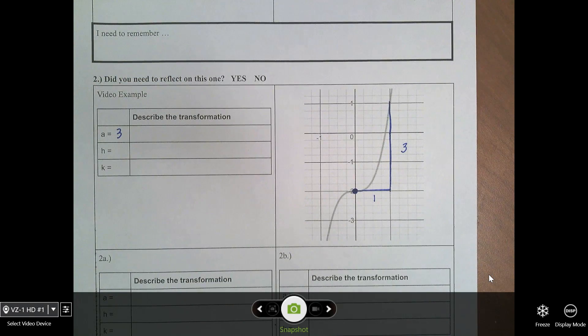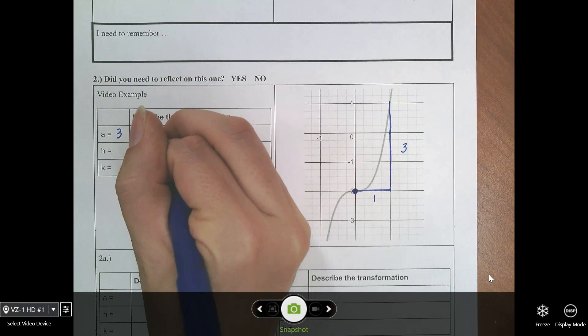So, that's our a value. So, we have an a value of three. And we're going to describe that right now. Since that's greater than one, that's going to be a stretch.